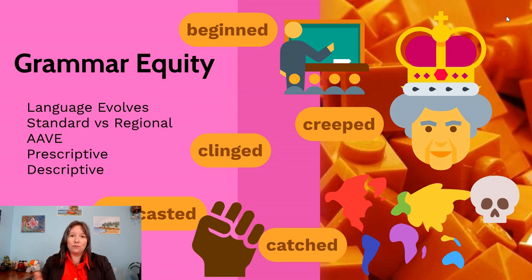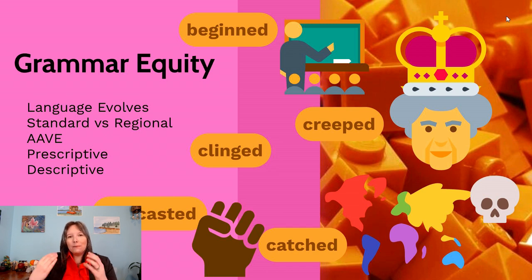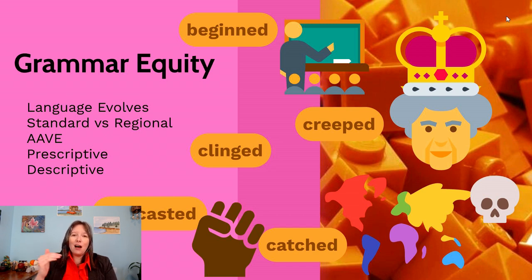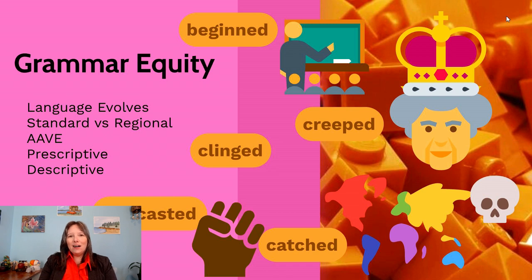Prescriptive grammar doesn't make room for differences or acknowledge how language changes — it makes everyone speak in standard English versus allowing regional fluctuations. Instead, we have descriptive grammar: rather than telling people what the rules are, we pay attention to and describe regional variations. Linguists travel around and observe how different regions pronounce vowels, or drop the 'g' in '-ing' words, saying 'workin'' instead of 'working.' This is why English has so many variations — the Irish twang in Newfoundland, the Cajun twang in New Orleans, Australian English, inner-city Chicago — all are acceptable forms of language with their own unique grammar, dialect, and accent.